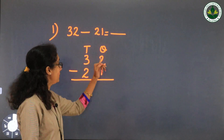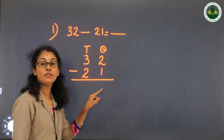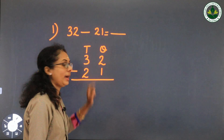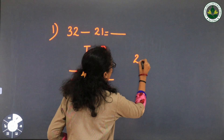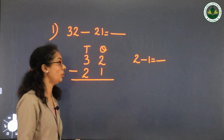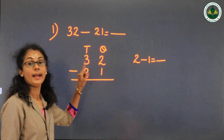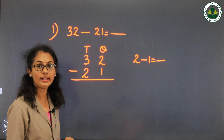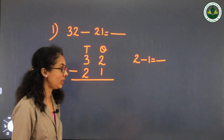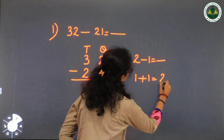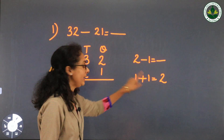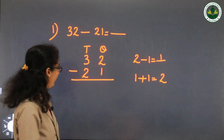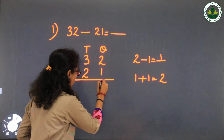Start from the ones place. Digits in ones place are 2 and 1. 2 minus 1 equals 1. Write that 1 in the ones column.